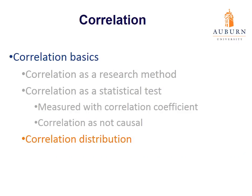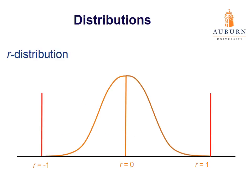Let's look at the distribution for a correlational test. The correlation test, or R test, is very similar to the T test, so it's no surprise that the distribution looks similar to a T distribution. The biggest difference is that the correlation distribution actually touches the x-axis at two points — at negative 1 and 1 — because a correlation coefficient can't be less than negative 1 or greater than 1. So while it functions like a normal, unimodal distribution, it is constrained and touches the x-axis at those two points.